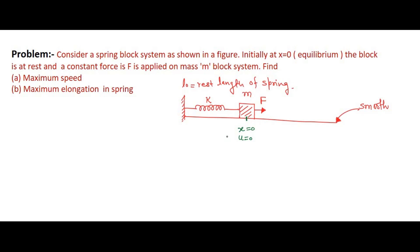The surface on which the block is moving is smooth. L₀ is the rest length of the spring, a constant force F is applied, at x = 0 the initial velocity is zero, and the stiffness constant of the spring is k. That is the whole problem.